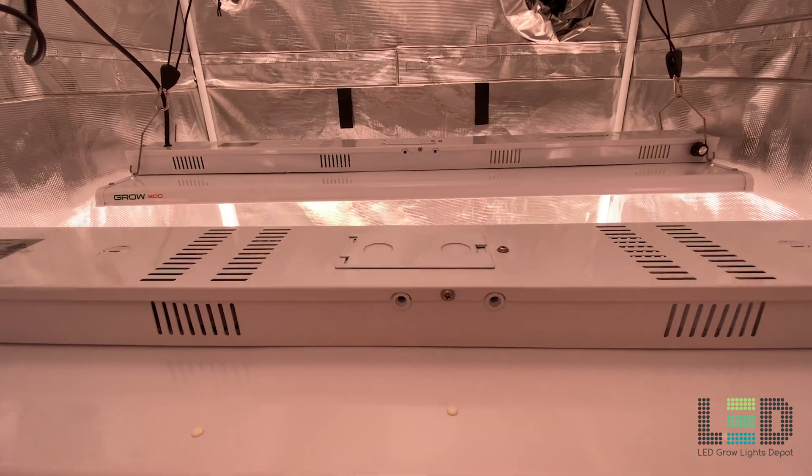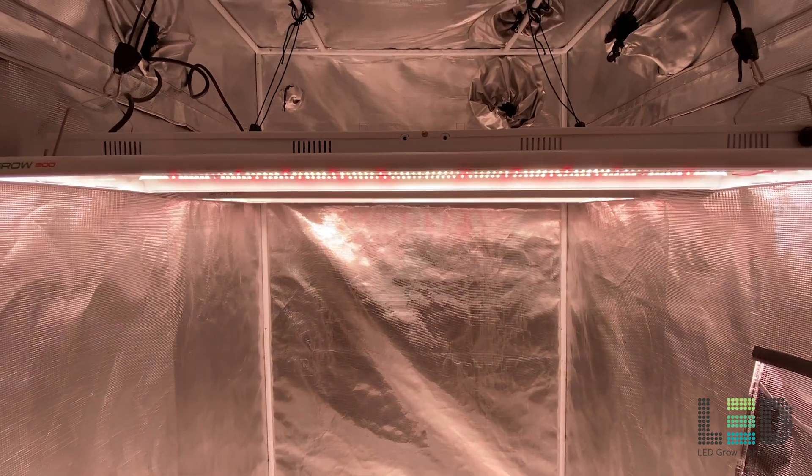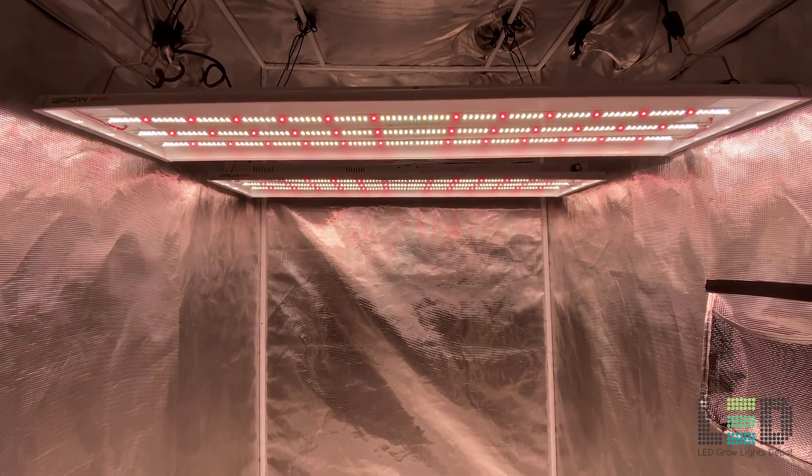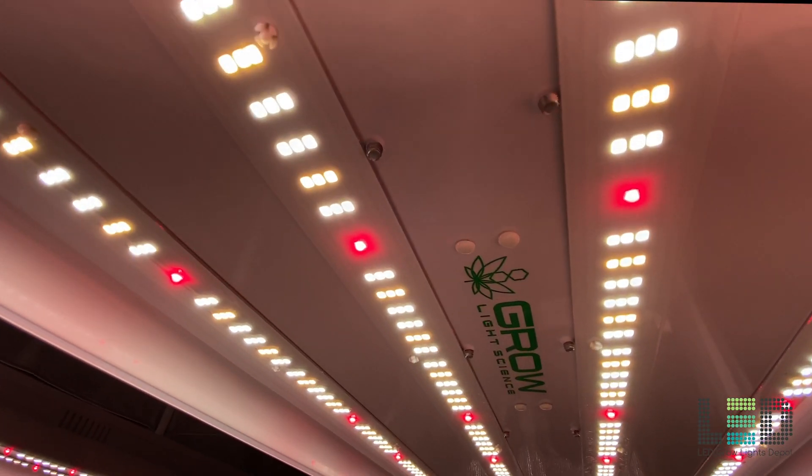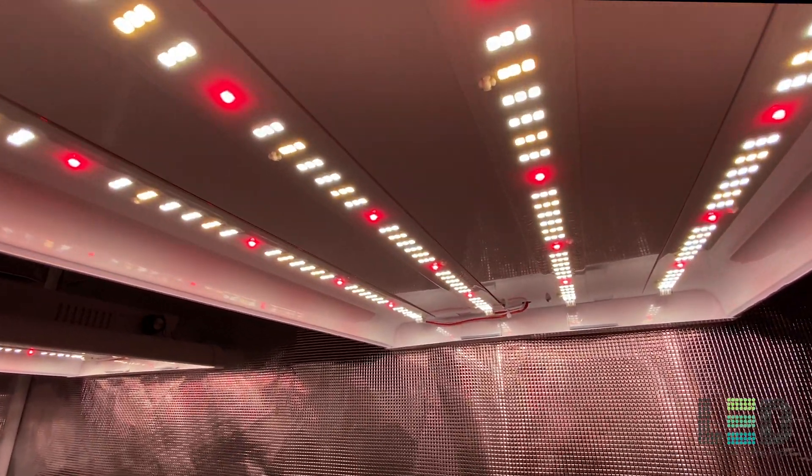Grow Light Sciences operations, engineering, and customer service is based in Detroit, USA. The lights are ETL certified, come with a 5-year manufacturer's warranty, 120-day return window, and can be used for both home and commercial grows.